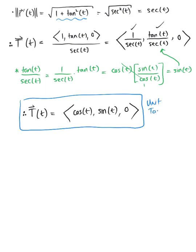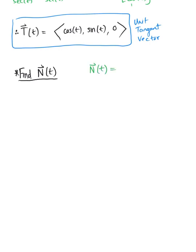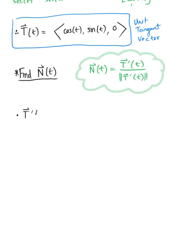We can now use our unit tangent vector to find the principal unit normal vector. The principal unit normal vector, capital N of t, is defined as the derivative of our unit tangent vector divided by the magnitude of that derivative. We already have the unit tangent vector, so we differentiate it. The derivative of our unit tangent vector has components ⟨−sin(t), cos(t), 0⟩.